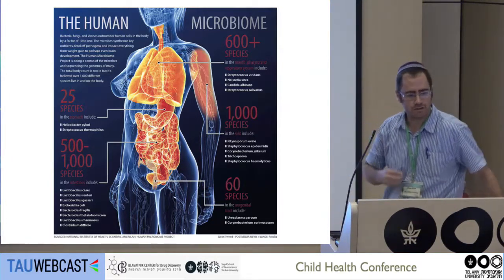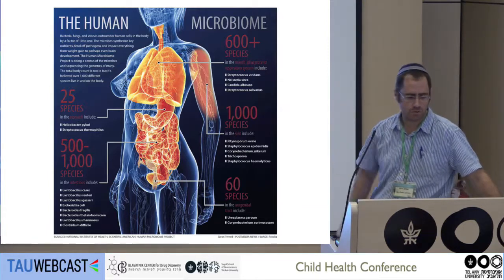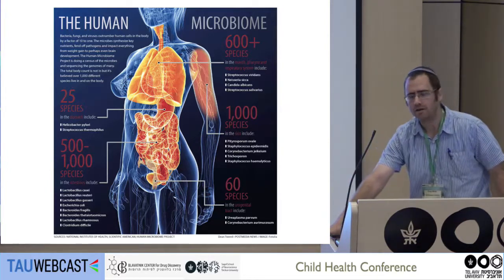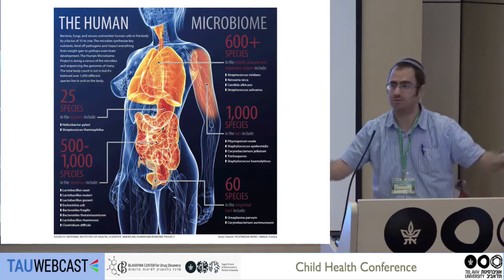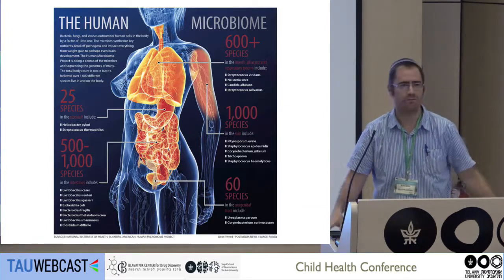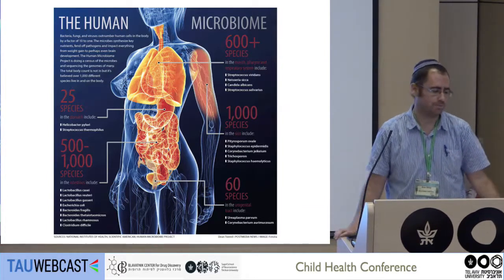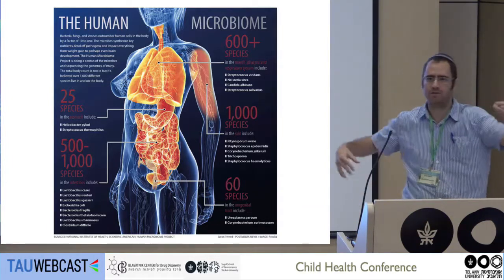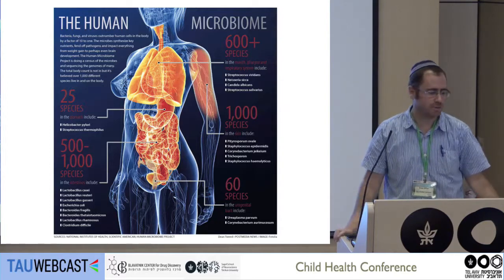In my lab, I work on two subjects: one on molecular mechanisms in the development of autism, and another on the role of three-dimensional genome structure in behavior. Today I'd like to talk specifically about some projects dealing with the microbiome and autism. These projects are born out of a collaboration — I'm the neuroscience guy and Dr. Omri Koren is the microbiome guy and we work together. The microbiome is basically the population of bacteria which lives within us, and in every part of our body we have a different population of bacteria, each necessary for different bodily functions, which we live in symbiosis with.